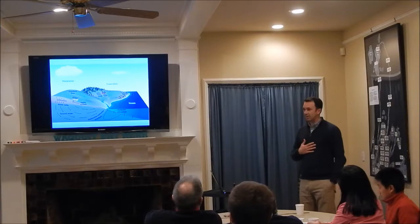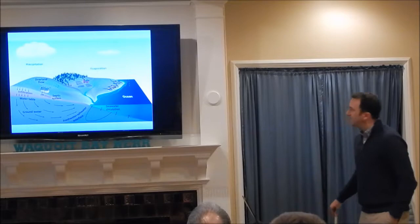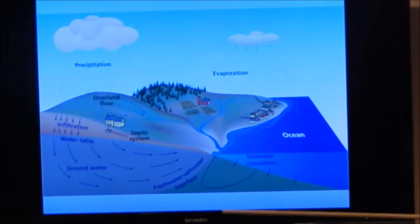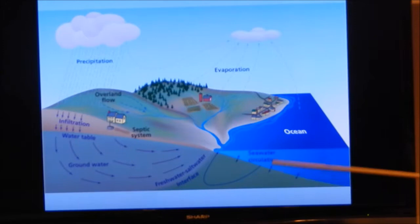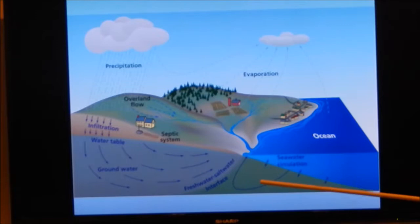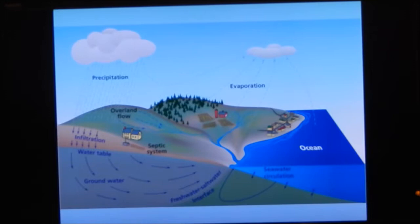I'm a chemical oceanographer and my main research interest is in how groundwater transports chemicals into the ocean. Here's a cartoon of the water cycle in the coastal ocean with evaporation over land and the ocean, falling back through precipitation, making its way into the ground through groundwater recharge, filling up the water table and forming an aquifer along the coastline. That groundwater can make its way back to the ocean through submarine groundwater discharge, passing through the subterranean estuary — the mixing zone between salty groundwater beneath the ocean and fresh groundwater beneath the land.